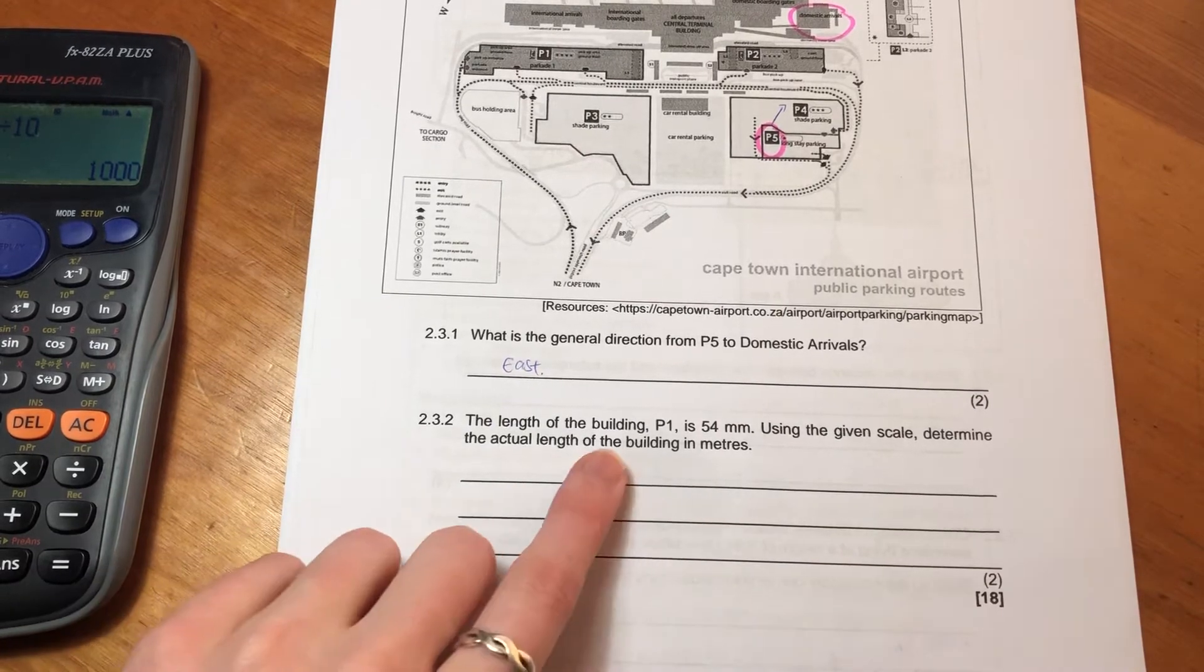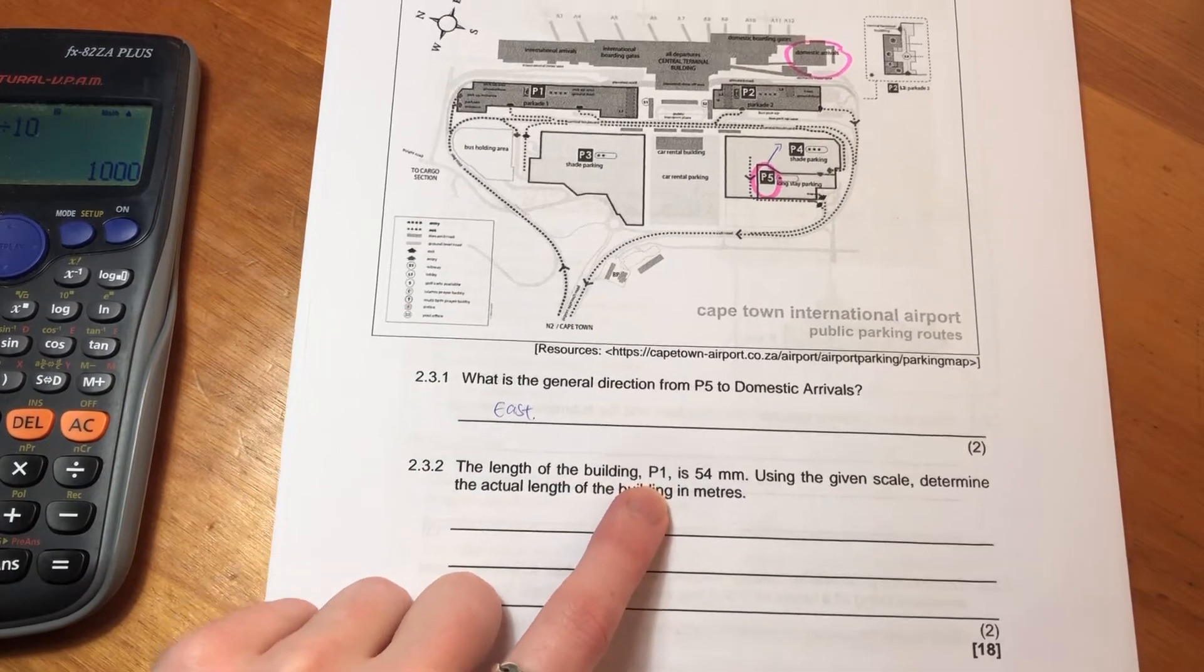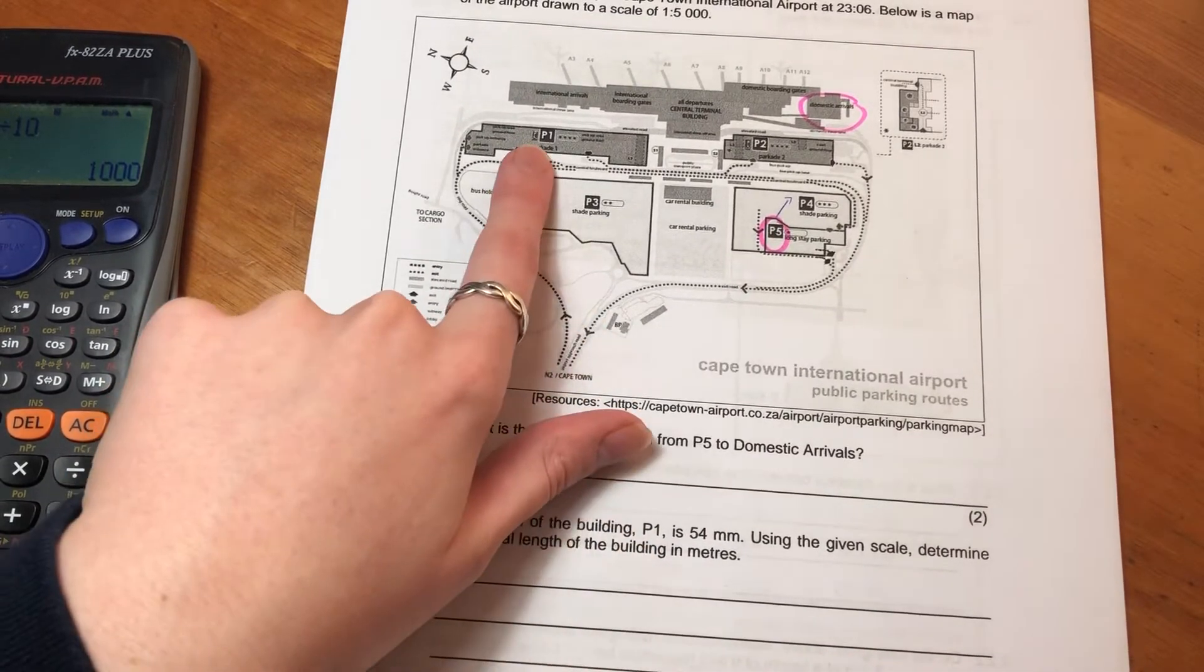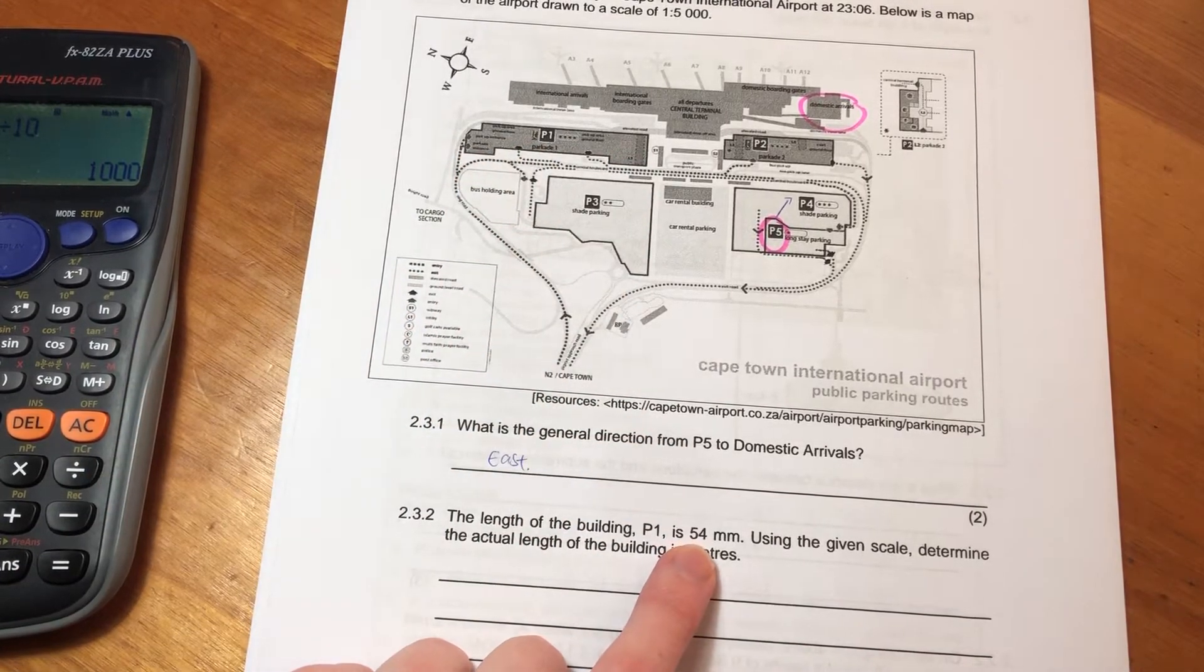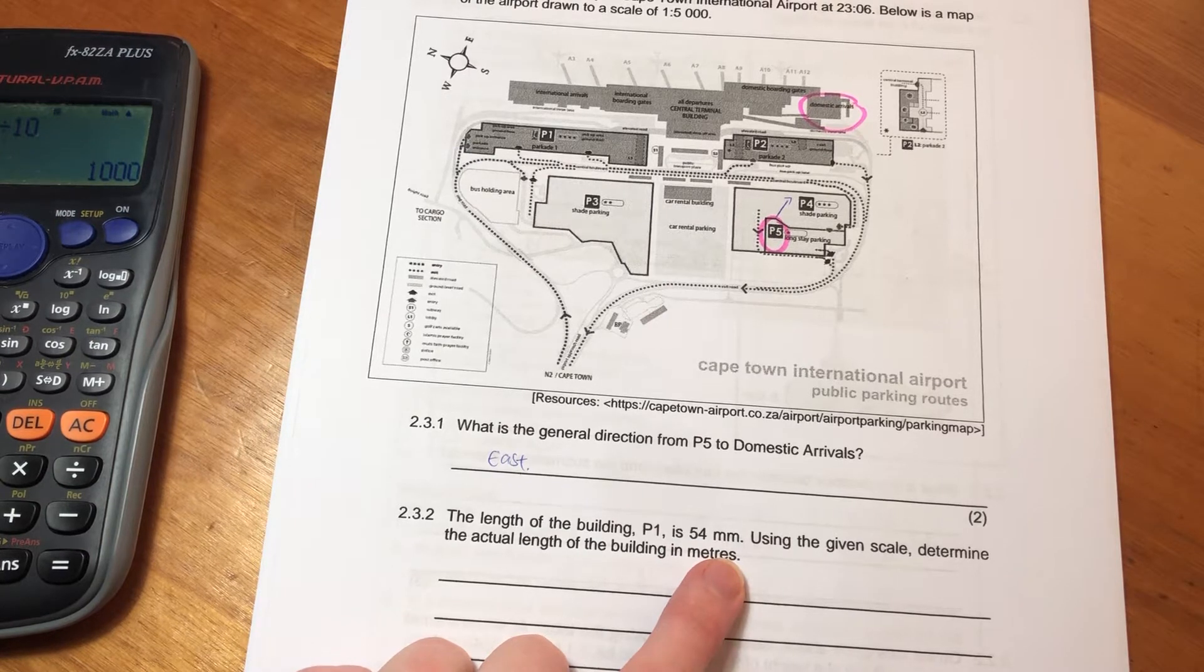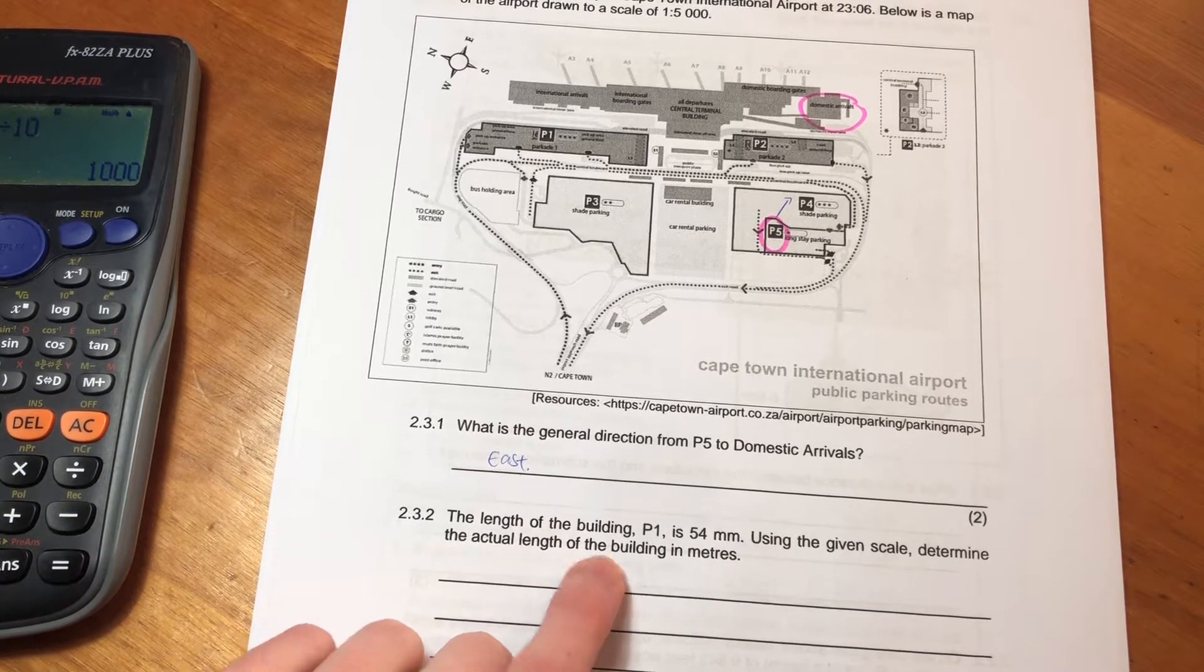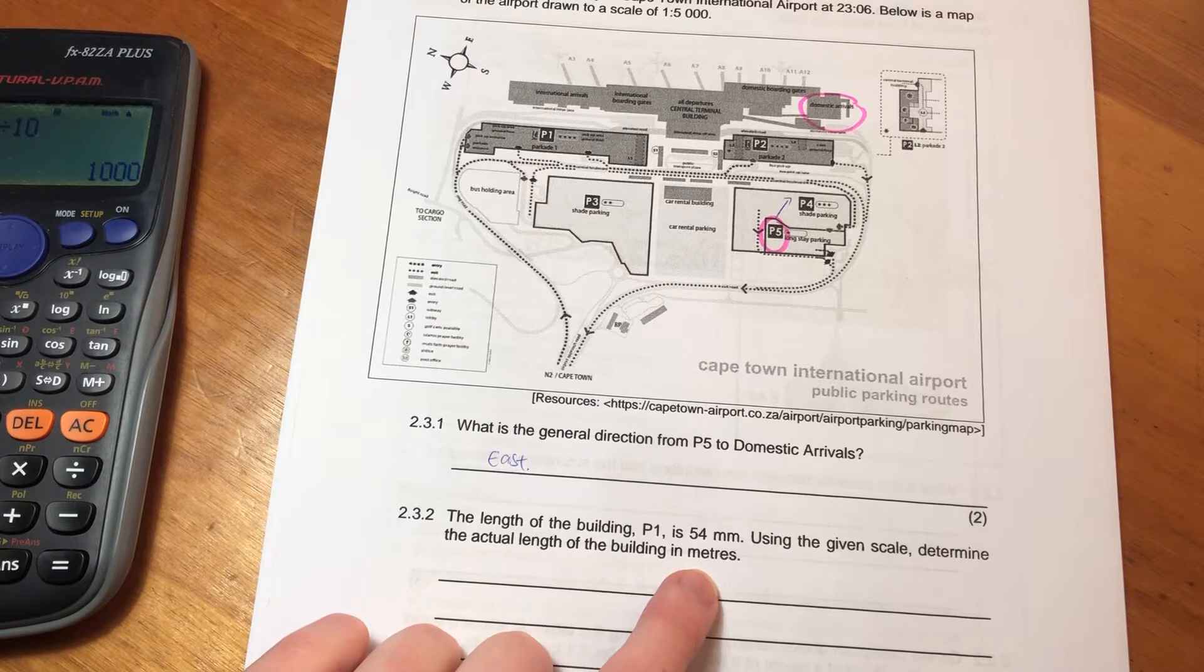It says the length of the building P1. Let's find P1. So P1 is over there. Is 54 millimeters. Using the given scale to determine the actual length of the building in meters.